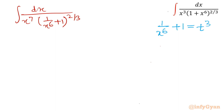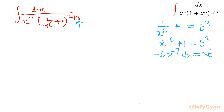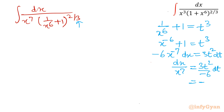Since (1/x⁶ + 1) = t³, we write x⁻⁶ + 1 = t³ and take the derivative: −6x⁻⁷ dx = 3t² dt. So dx over x⁷ equals 3t² over −6 dt, which simplifies to −t²/2 dt.